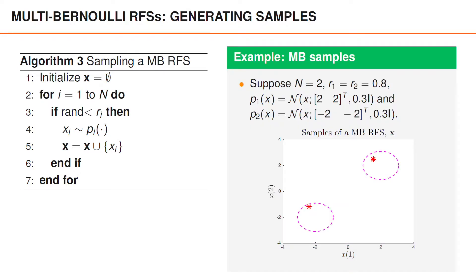Let us look at samples from the multi-Bernoulli process with two Bernoulli components, both with parameter r equals 0.8. The spatial PDF of the first Bernoulli random finite set is a Gaussian density with mean (2, 2) and covariance matrix 0.3 times the identity matrix. The spatial PDF of the second is the same, except that the mean is (-2, -2).